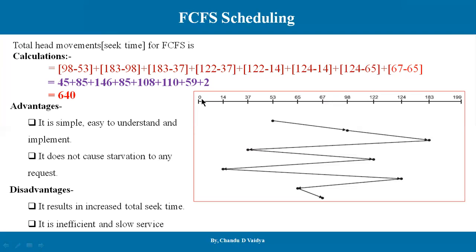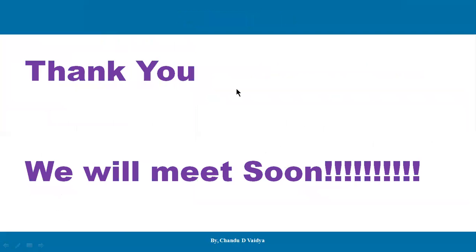To summarize how to solve FCFS numericals: identify the pending requests, know the current head position, know the total cylinder count, then plot all tracks on the cylinder in ascending order — don't forget to mark the starting point. Then calculate the head movement by taking the absolute difference between consecutive positions and summing them to get total seek time. In the next algorithm, we will look at Shortest Seek Time First, which aims to reduce the seek time. Thank you for watching.